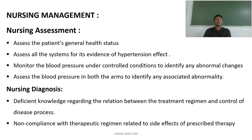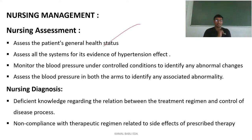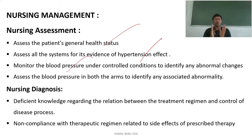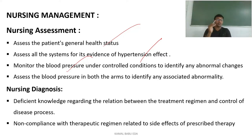Coming to nursing management — to form a nursing diagnosis, first you need to do an assessment. You should assess the patient's general health status and all systems for evidence of hypertension effects. Monitor blood pressure under controlled conditions to identify abnormal changes, and assess blood pressure in both arms. When both arms give consistent values, you can confirm hypertension and form the diagnosis accordingly.